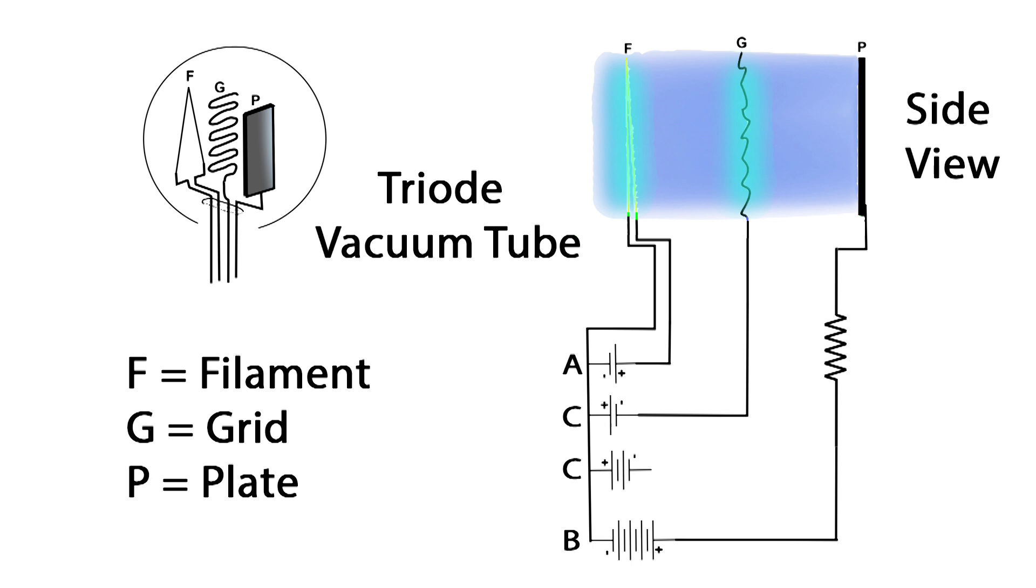That's interesting. So the negative charge on the grid is retarding the flow of electrons from the filament to the plate. Now if we go to the next C battery, we have a larger minus charge on the control grid. And it has stopped the flow of electrons from the filament to the plate altogether. So the grid controls the flow of electrons from the filament to the plate.